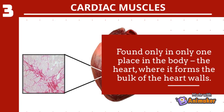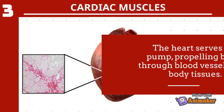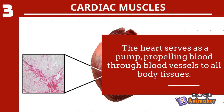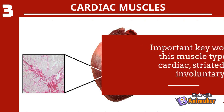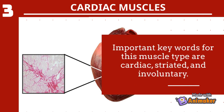The last type is cardiac muscle, found only in one place in the body — the heart — where it forms the bulk of the heart wall. The heart serves as a pump, propelling blood through vessels to all parts of the body. Important keywords for this muscle type are: cardiac, striated, and involuntary.